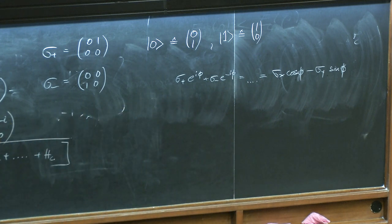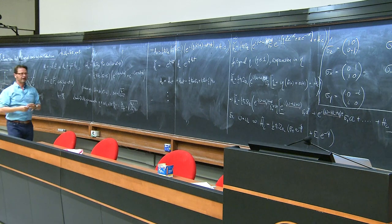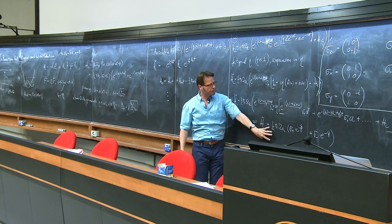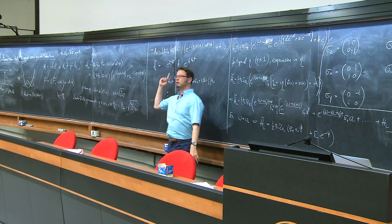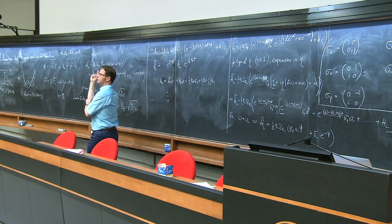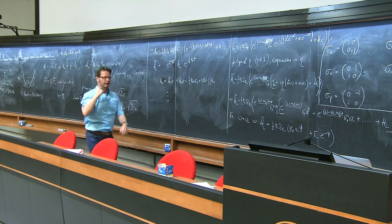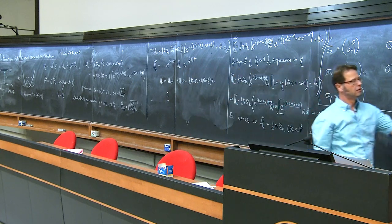Remember, you can visualize the time evolution operator derived from this Hamiltonian as simply a rotation on the Bloch sphere — rotating around the X axis or the Y axis. To illustrate: if you start with a spin-up state and let it evolve under this Hamiltonian with phase phi equal to zero, you rotate around the X axis, and you can stop the interaction at any time and prepare a superposition state or flip the spin.